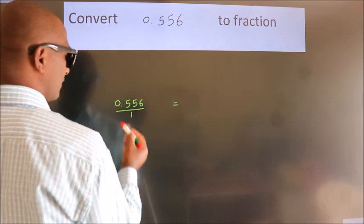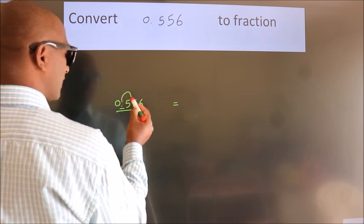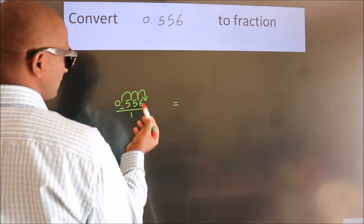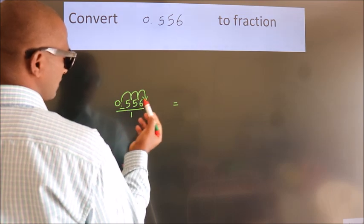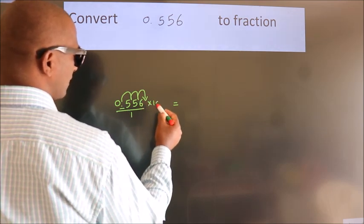For that we have to move this decimal after 1, 2, 3 numbers. To move this decimal after 3 numbers, we have to multiply it with 1000.